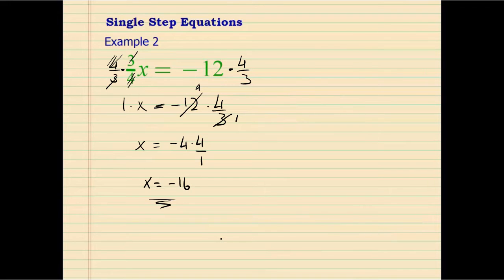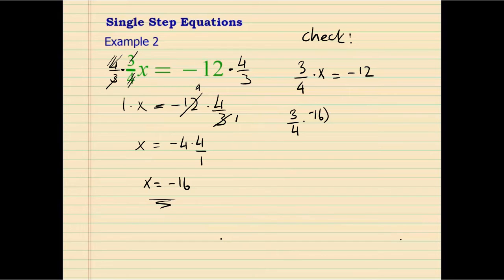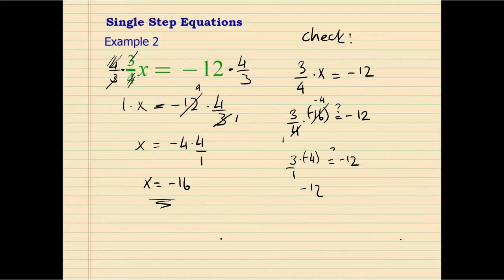So x equals negative 16. Is this answer correct? Let's check. The original equation was 3 over 4 times x equals negative 12, so substitute negative 16 for x: 3 over 4 times negative 16. We can divide before multiplying — negative 16 divided by 4 is negative 4, giving 3 times negative 4, which is negative 12. Negative 12 equals negative 12 — our answer is confirmed correct.